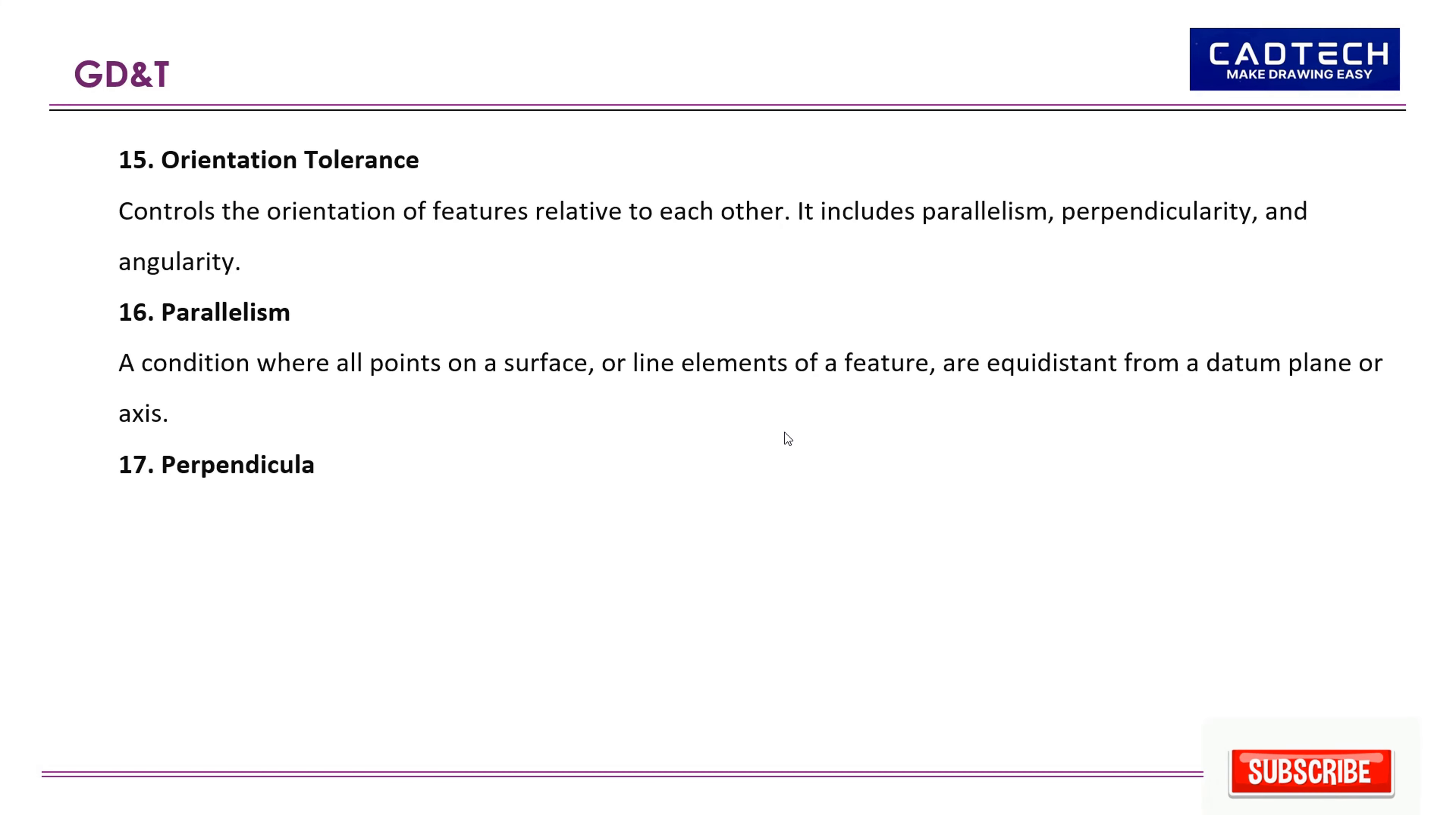17. Perpendicularity: A condition where a surface or axis is at a right angle, 90 degrees, to a datum plane or axis. 18. Position: The location of a feature relative to a datum.